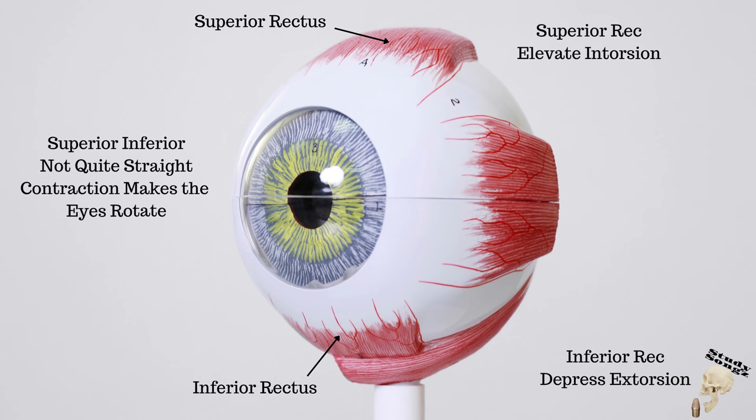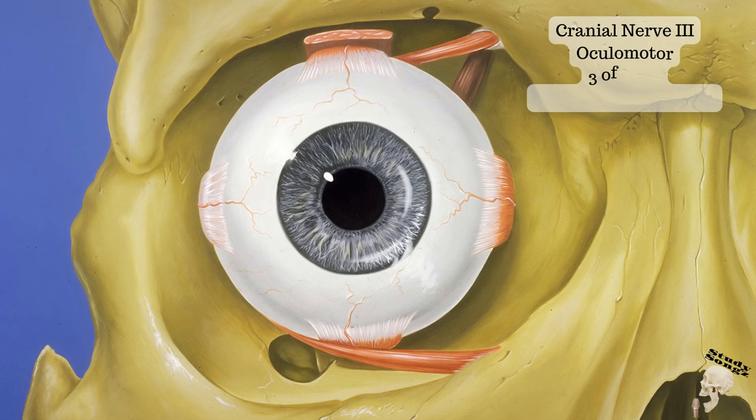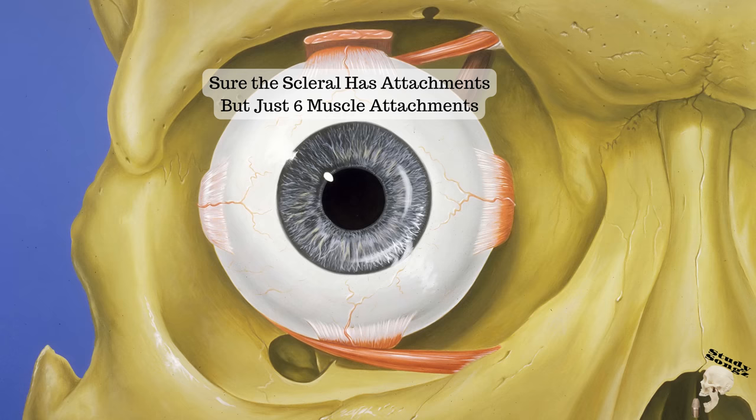Medial rectus: adduction. Lateral rectus: abduction. Lateral rectus has different innervation — cranial nerve six, that's the abducens. Cranial nerve three: oculomotor — three of the four, in no particular order: superior, inferior, and medial rectus. Cranial nerve three, oculomotor.